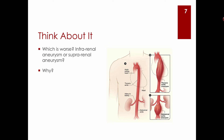Aneurysms can occur in any artery or arteriole in the body. Thoracic aneurysms are above the diaphragm. Abdominal aneurysms are either supra-renal — above the renal arteries — or infra-renal, below them. The infra-renal ones are somewhat less worrisome because they don't threaten kidney blood flow as much as supra-renal ones.